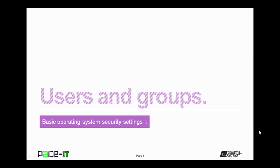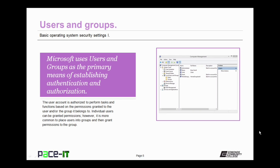We begin by talking about users and groups. Microsoft uses users and group settings as the primary form of authentication and authorization. The user is authorized to perform tasks and functions based on the permissions that are granted through the users and group settings. Individual users can be granted permissions, but it is much more common to place users into groups and then grant the group permission. It's a whole lot easier to manage that way than to manage each individual user.